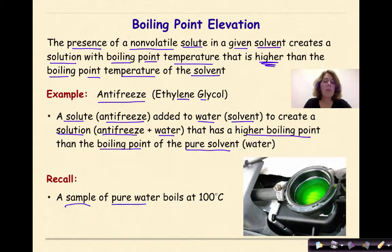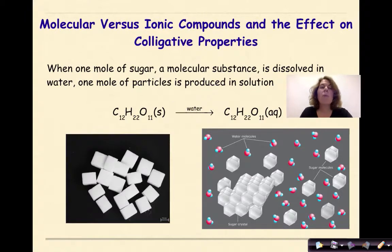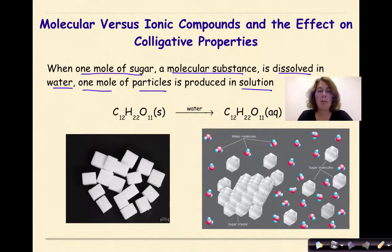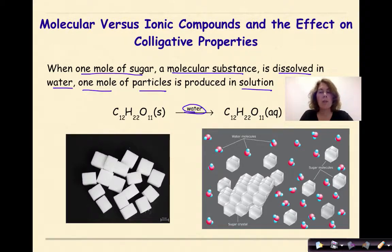So remember, a sample of pure water boils at 100 degrees Celsius. Molecular versus ionic compounds and the effects on colligative properties. When one mole of sugar, a molecular substance, is dissolved in water, one mole of particles is produced in solution. Here we have some examples of sugar cubes added to water, and as you can see in the image to the right, the sugar particles — represented as hexagonal shapes — are interacting with the water molecules. You don't see any charged particles being formed. The sugar cube dissolves and just becomes individual molecules of sugar surrounded by water molecules.